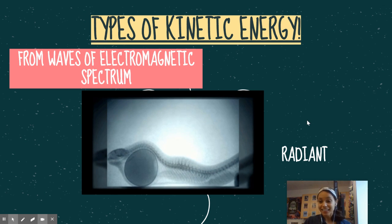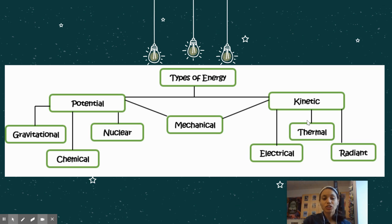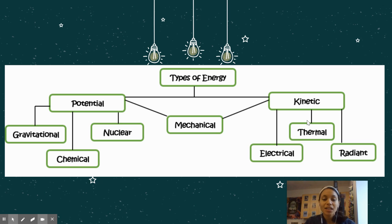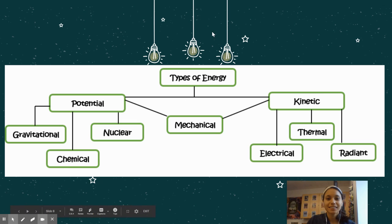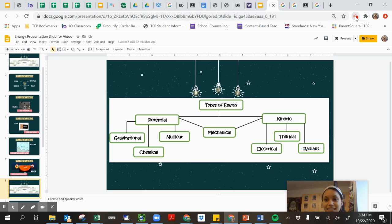So overall, that is it for energy. Remember, we discussed seven types or forms of energy. Make sure that you take those notes and read some more about these types of energy. Awesome, thanks guys!